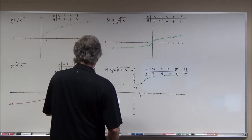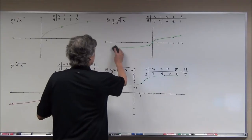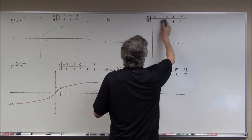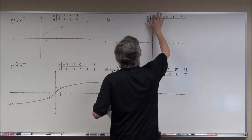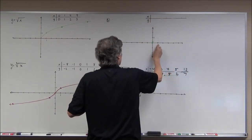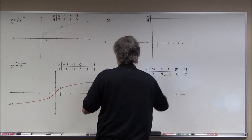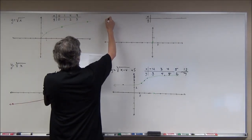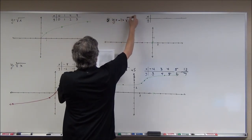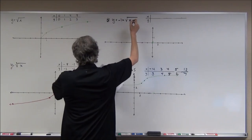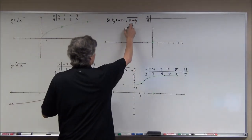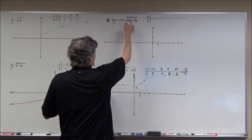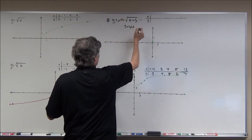The next one — we're back to square roots. Problem 5: y equals negative 1 plus the square root of (x − 3). The minus 3 inside the radical is 3 to the right. The minus 1 on the outside means 1 down. So it's the parent square root graph moved 3 to the right and down 1.